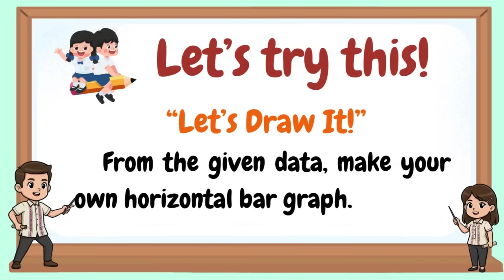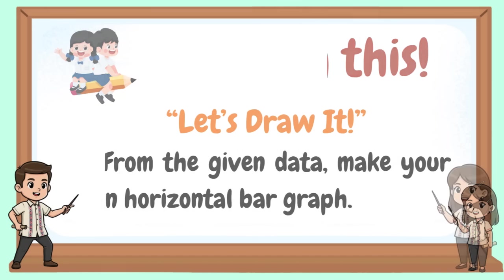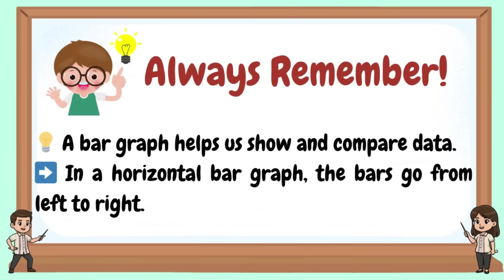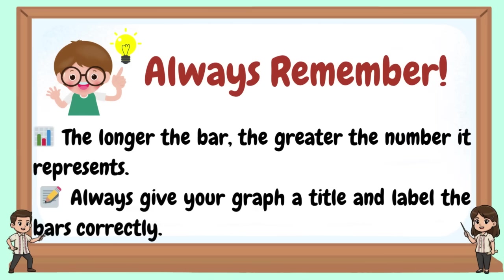Let's try this. Let's draw it. From the given data, make your own horizontal bar graph. Always remember: a bar graph helps us show and compare data. In a horizontal bar graph, the bars go from left to right. The longer the bar, the greater the number it represents. Always give your graph a title and label the bars correctly.